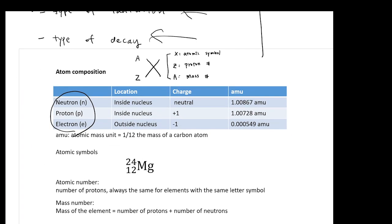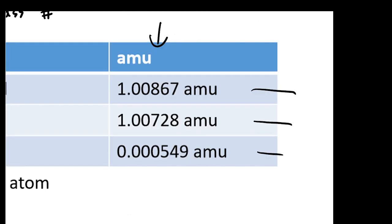Atoms are made out of protons, neutrons, and electrons. When we think about mass, compared to protons and neutrons, the mass of electrons is extremely small. Basically, the mass of your atom is contributed from the sum of neutrons and protons — the mass of the atom is essentially just coming from the mass of your neutrons and protons.